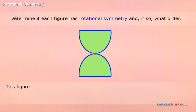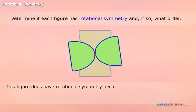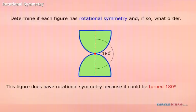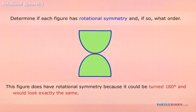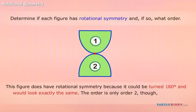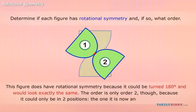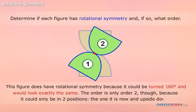This figure does have rotational symmetry because it could be turned 180 degrees and would look exactly the same. The order is only order two, though, because it could only be in two positions — the one it is now and upside down.